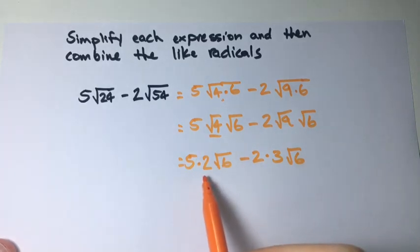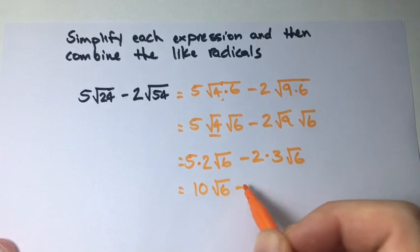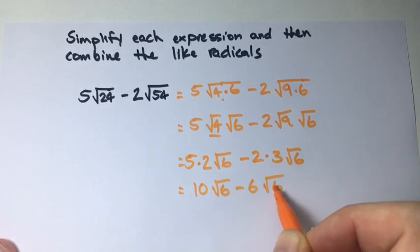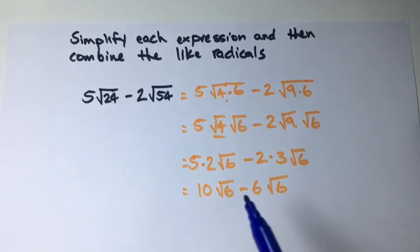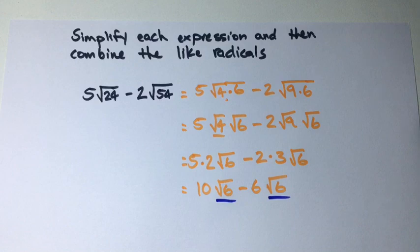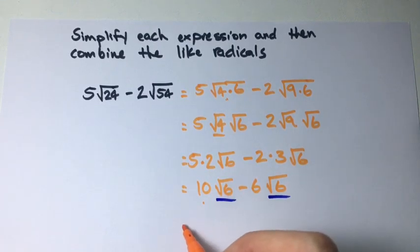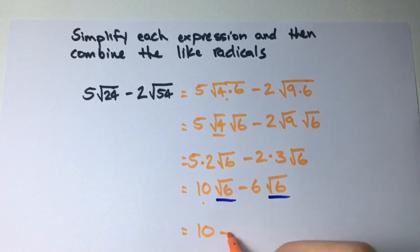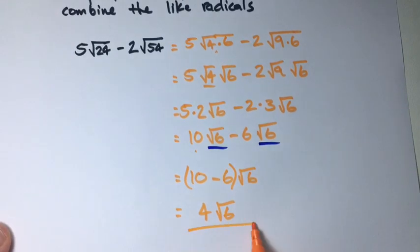Now let's multiply our coefficients. This gives us 10 times the square root of 6 minus 6 times the square root of 6. We have like radicals, so we can combine the coefficients — in this case subtract. So 10 minus 6 times the square root of 6 equals 4 times the square root of 6. And that is your final answer.